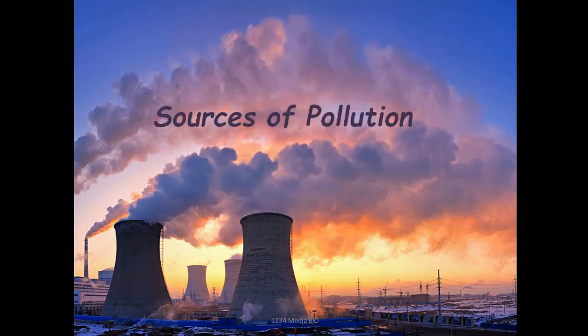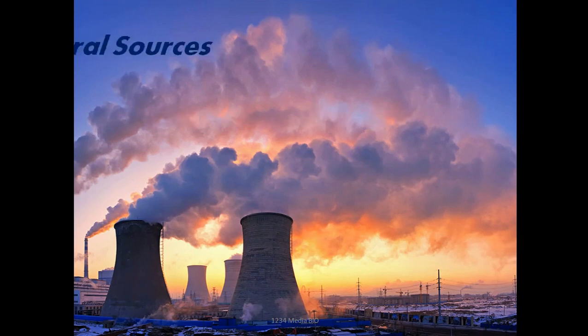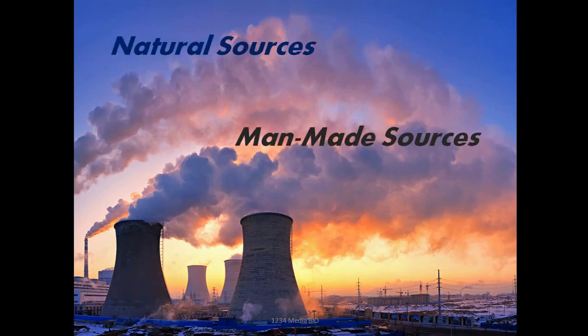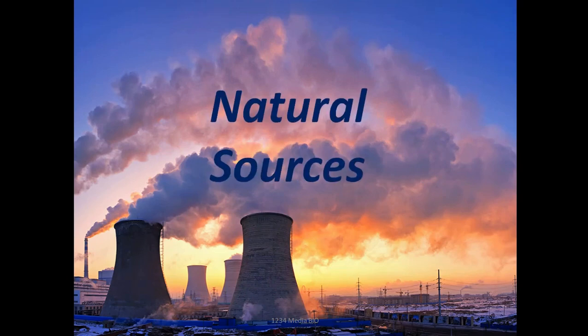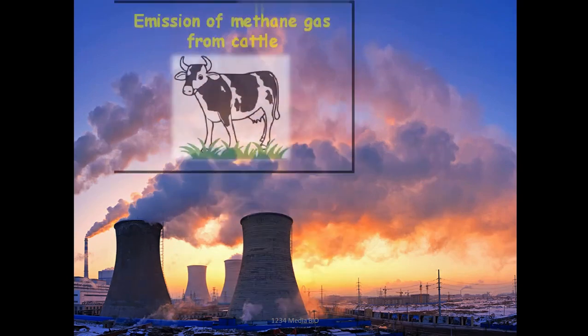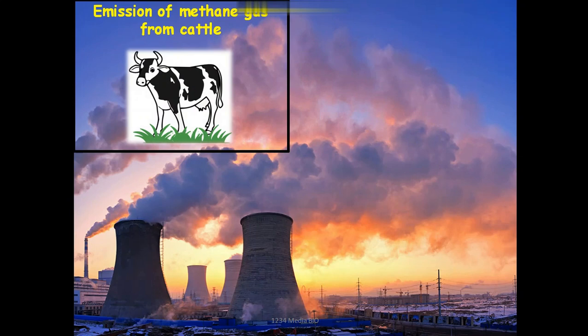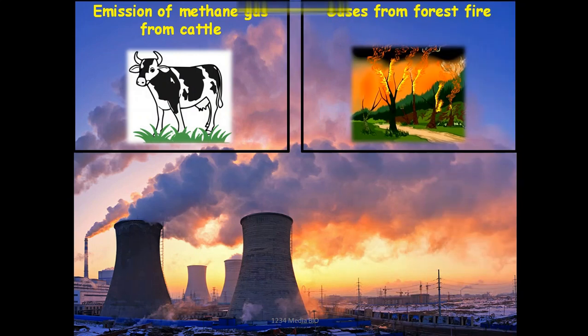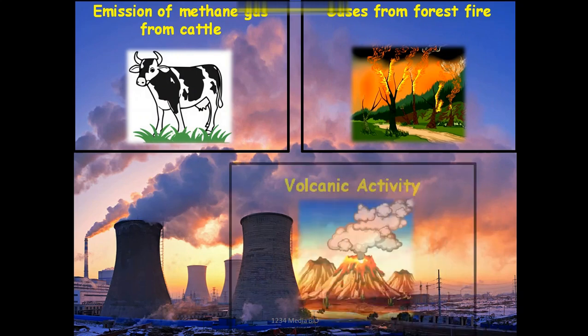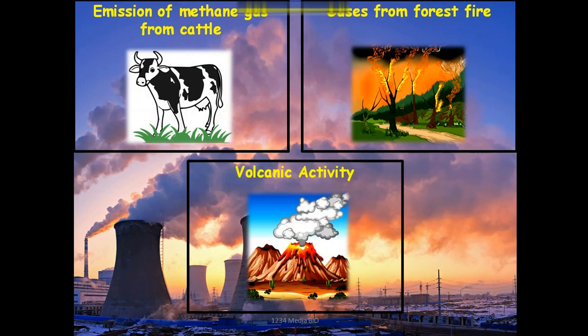There are two sources of pollution: natural sources and man-made sources. Natural sources include waste products of cattle, which are rich in methane gas that gets into the atmosphere and pollutes it. Smokes and dust particles from forest fires also pollute the air, and fumes from volcanic activity contribute significantly to air pollution.